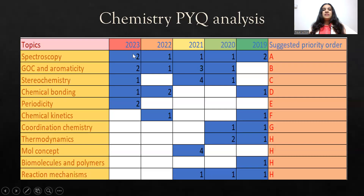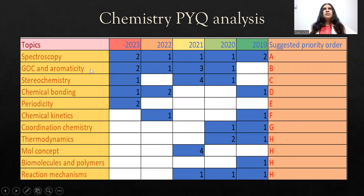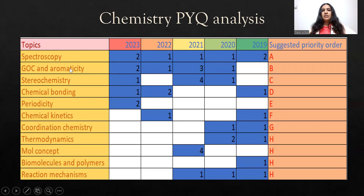As you can see, in 2023 there were two questions from spectroscopy — one question was from NMR and the second was from ESI. Two questions were from GOC and aromaticity, like which one is more acidic or basic, and aromaticity rules. One question was from stereochemistry, one from chemical bonding, and two questions were from periodicity.